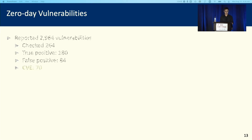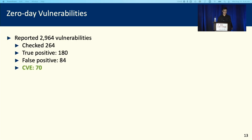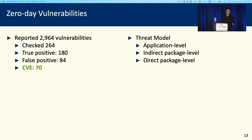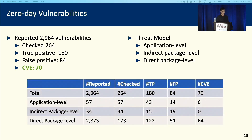Let me talk about the zero-day vulnerabilities. In total, our tool reported 2,964 vulnerabilities, and we sorted those vulnerabilities based on popularity and checked the top 264 vulnerable packages. It turns out we have 180 true positives and a total of 70 different CVE identifiers. We split those zero-day vulnerabilities into three different threat models: application level, indirect package level, and direct package level.